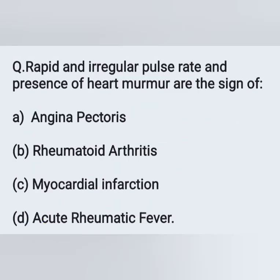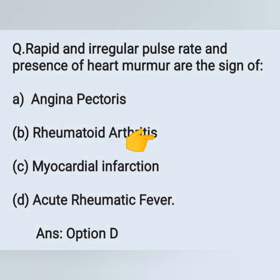A rapid and irregular pulse rate and presence of heart murmur are signs of: Option A: angina pectoris. Option B: rheumatoid arthritis. Option C: myocardial infarction. Option D: acute rheumatic fever. A rapid and irregular pulse rate and presence of heart murmur are signs of acute rheumatic fever. Option D is the correct answer.